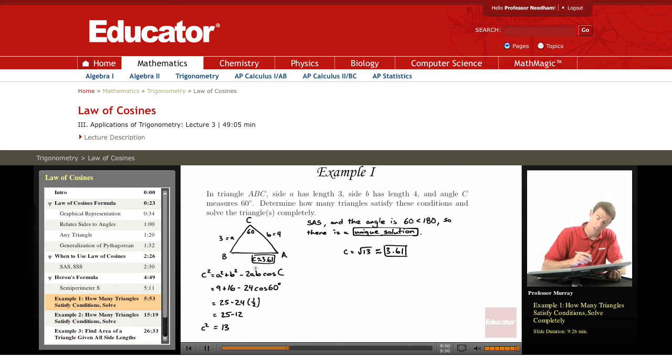So now I've got the third side of the triangle. The only thing that's left is it says to solve the triangles completely. So I need to find the other two angles, A and B. And to do that I'm going to use the law of sines. So let me write down the law of sines to refresh your memory.